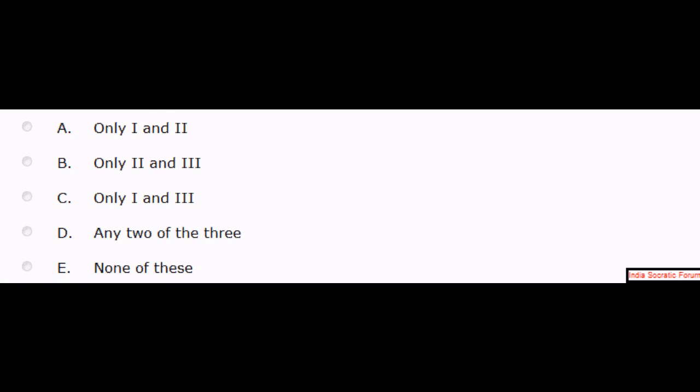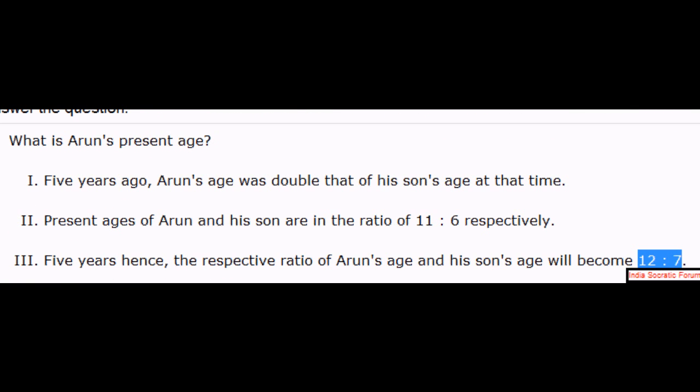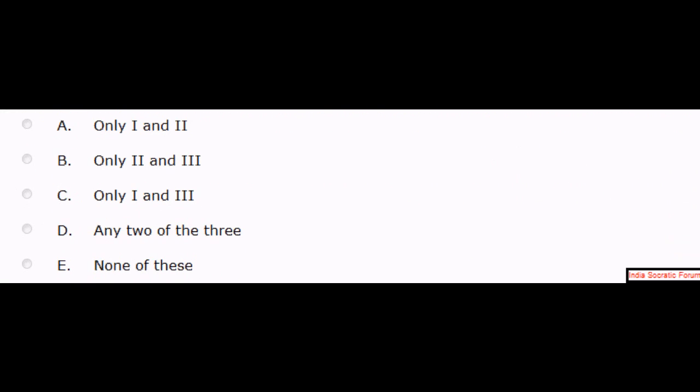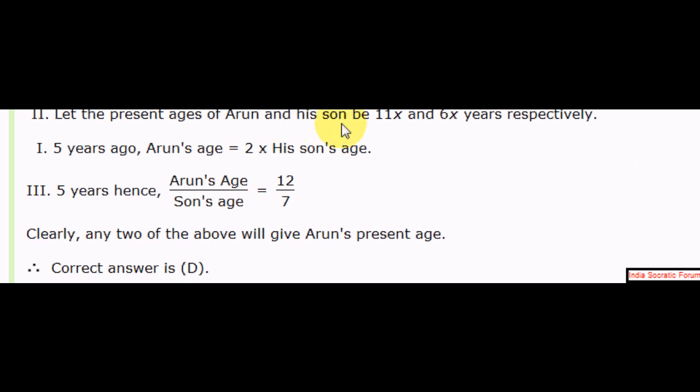Okay? The answer is option D, any of these 3. Any of these, any 2 of these 3. Okay, good. Any 2 of the 3 is the answer. Why? Let's see the explanation. Present age of Arun and his son be 11x, 6x. So it's the second point. From the first point, 5 years ago, 2 into his son's age, double the age. 5 years hence, Arun's age by son's age is 12 by 7. Any 2 of the above will give Arun's present age. Right? Any 2 will give Arun's present age. That's what the current answer is, D. Good job.